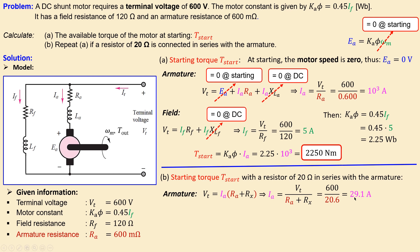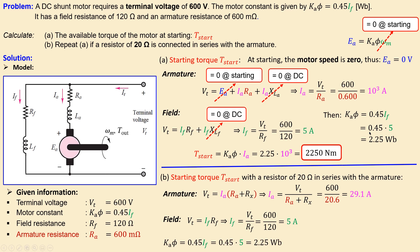The field equation and field current do not change — the field current remains 5 amperes because the series resistor is only in the armature path. Therefore the motor constant remains 2.25 weber. The new starting torque is 2.25 times 29.1 amperes, giving approximately 65.5 newton-meters — a very large decrease compared to the original 2250 newton-meters.